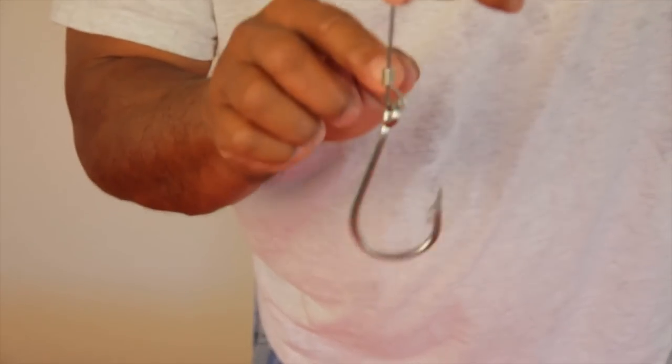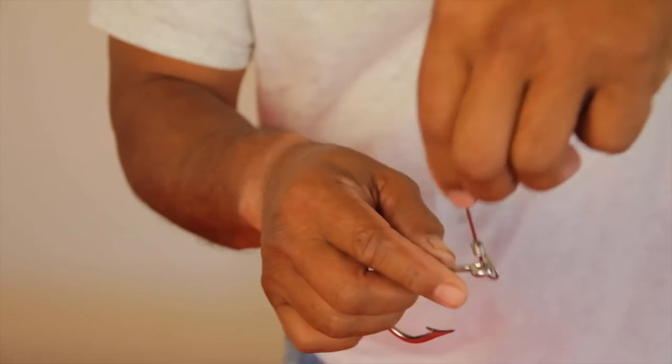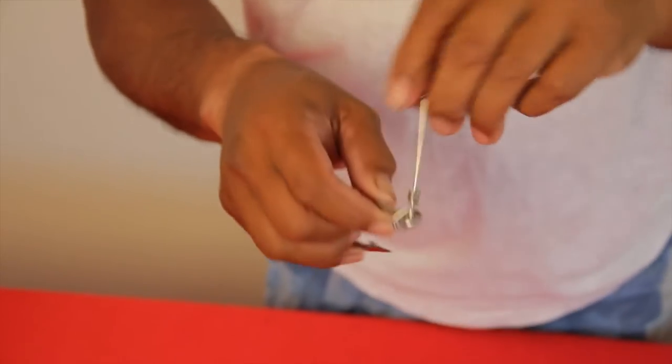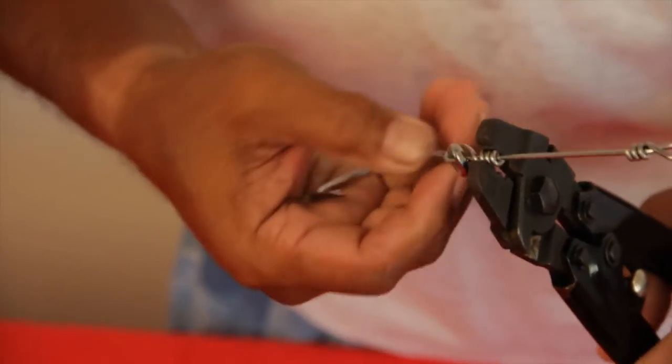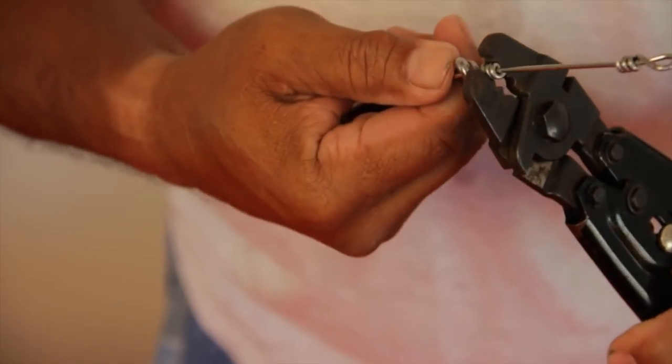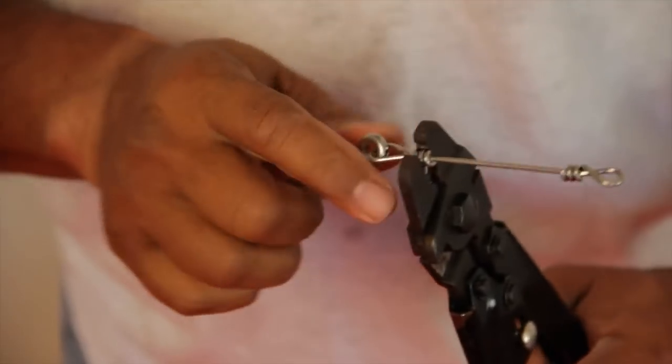Then you can notice again the hook is crooked. The loop is crooked. And what I do is, I just take them back around. And I grab them with the pliers again. And I just bend them until the hook comes nice and straight.